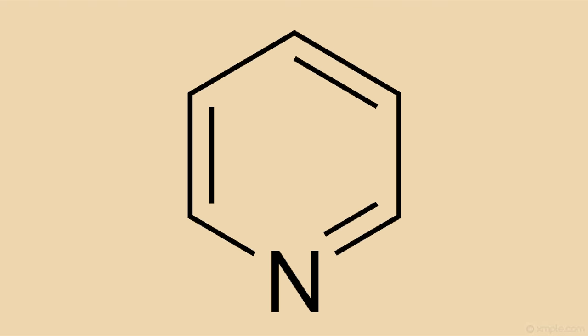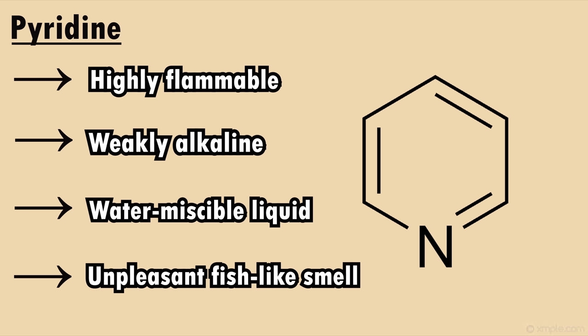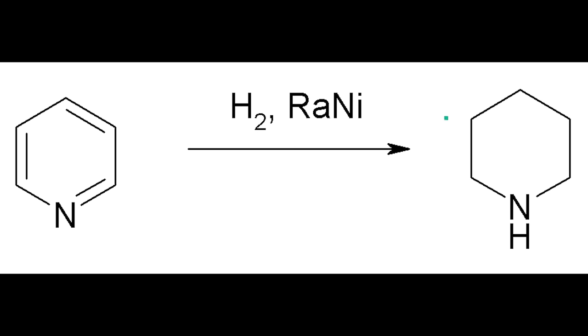Pyridine, one of nature's most foul-smelling chemicals. To me, it kind of smells like some stank cooch that you found on the beach. Now, pyridine is highly flammable, weakly alkaline, water-miscible, and it has an unpleasant fish-like smell.